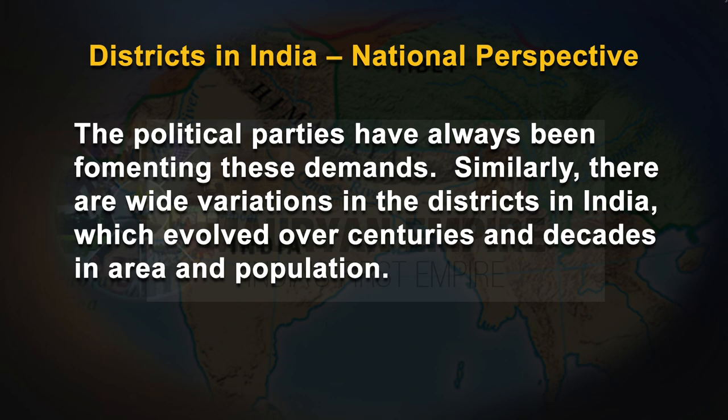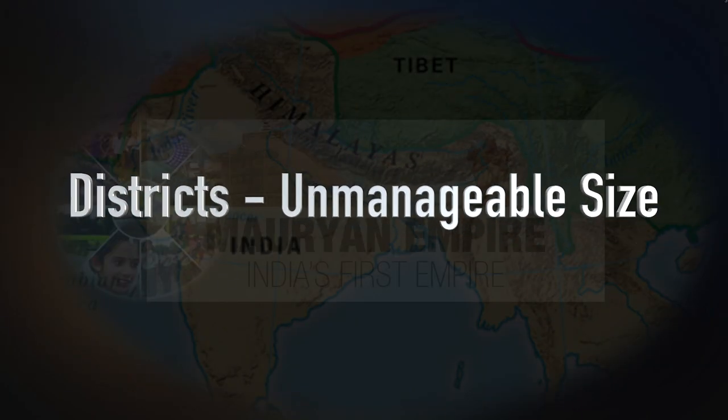Political parties have always been formulating these demands. Similarly, there are wide variations in India's districts, which evolved over centuries and decades in area and population. For example, the Thane district in Maharashtra and North 24 Paraganas in West Bengal, with over 10 million population as per census 2011, resemble not only states in the country but even countries of the world. It is these variations that are resulting in the demand for smaller administrative units like districts to bring the people closer to the administration.